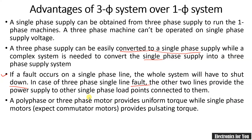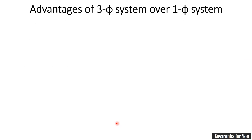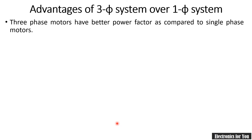A three-phase motor provides uniform torque while a single-phase motor provides pulsating torque. Three-phase motors are self-starting while single-phase motors cannot be started automatically. Three-phase motors also have better power factor as compared to single-phase motors.